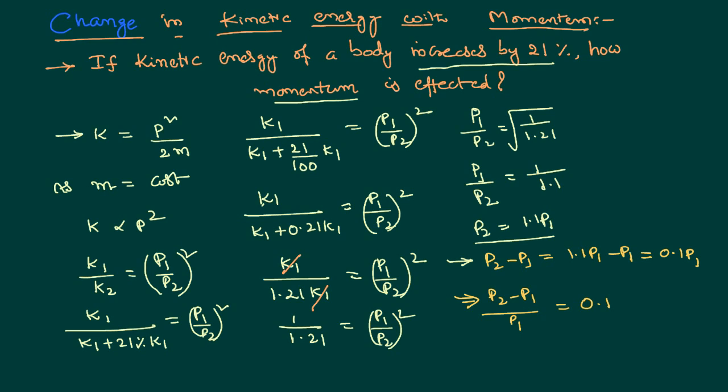People generally call it like a fractional change. Change in the momentum by original momentum is also called fractional change. But if you want a percentage of the fractional change, you want to convert any number into percentage, you shall multiply with the 100. So that is nothing but equal to 10%. So it is clear from this discussion that if you increase the kinetic energy by 21% its momentum increases by 10%.